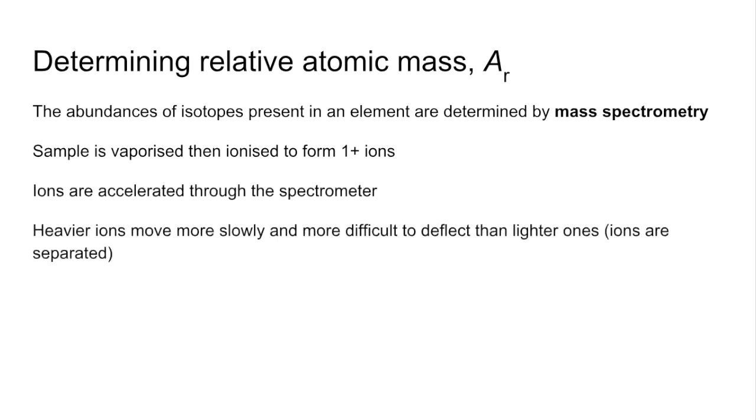The heavier ions move more slowly. They actually have to travel around a curve and that's how they get deflected. And it's more difficult to deflect the heavier ones than the lighter ones onto the detector. And that's how the ions are separated.